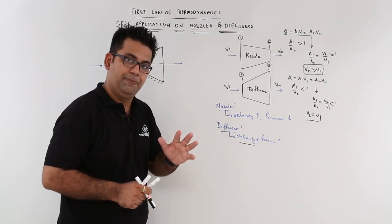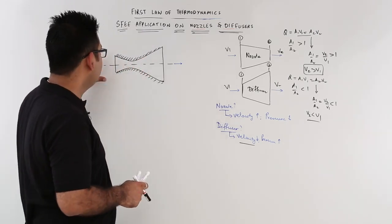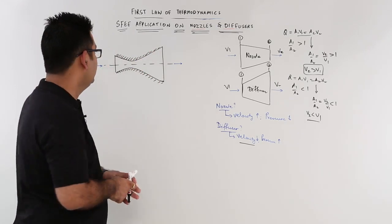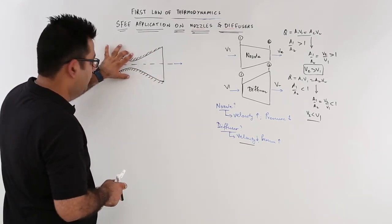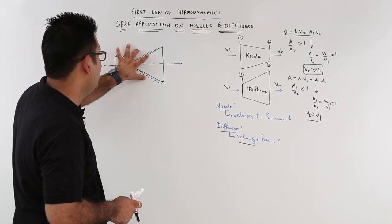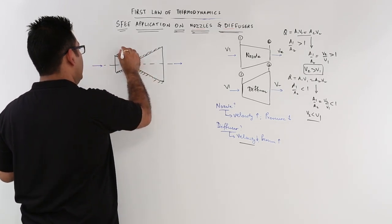Now let us apply the SFEE on a nozzle. So let us say this is that device that we call as a nozzle. So this is a convergent-divergent nozzle. You are converging up to a certain section and then you start diverging.